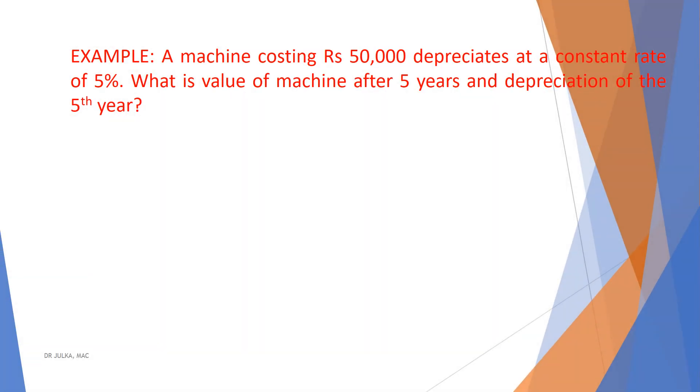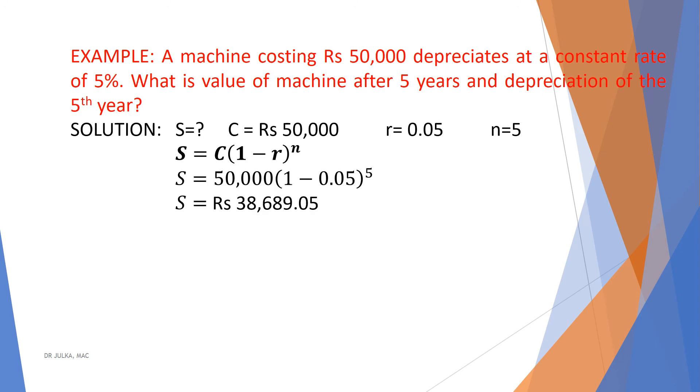In this example, a machine costing 50,000 depreciates at a constant rate of 5%. What is the value of machine after 5 years and also calculate depreciation of the 5th year? Here, C is 50,000 rupees, R is 5% which implies 0.05 and N equals 5 and we want to calculate S. We know that when depreciation is charged on diminishing balance method, S equals C multiplied by 1 minus R whole raised to the power N. Put C equals 50,000, R equals 0.05 and N equals 5 and we will get an answer of 38,689.05.